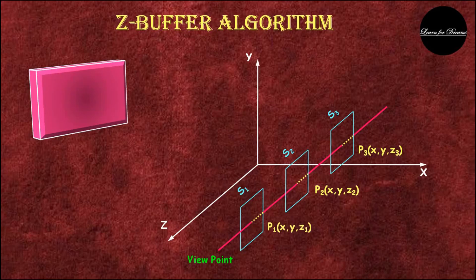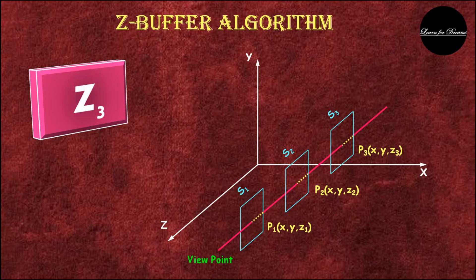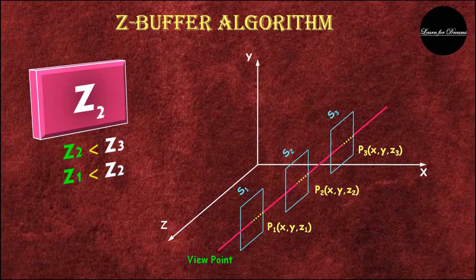Initially, S3 is the farthest from the viewpoint, so Z3 is stored. Then S2 is nearer from the viewpoint, so Z3 is replaced and Z2 is stored. Then S1 is the nearest point, so Z2 is replaced and Z1 is stored.